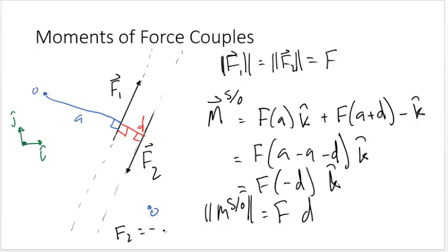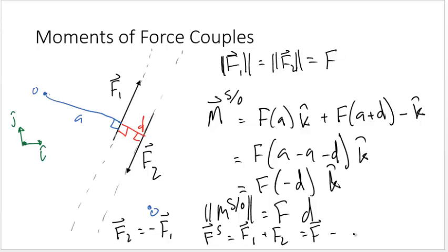Another interesting thing about a force couple is that since F2 is equal to the negative of F1, the resultant force on the system is equal to F1 plus F2, but this equals F1 minus F1, which equals zero. Therefore the moment of a couple is arbitrary of any moment center you choose in the system, and the resultant force on the system is zero.